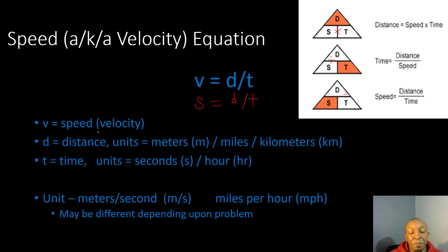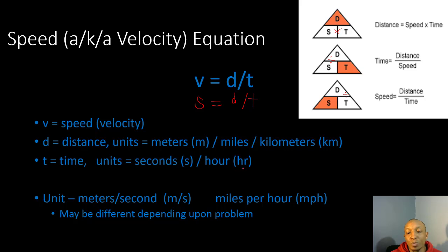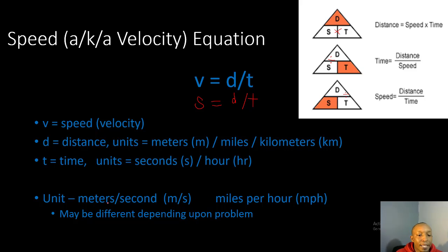v stands for speed or velocity. d stands for distance — units can be meters (m), miles, or kilometers (km). t stands for time — units can be seconds (s) or hours (hr). The unit for velocity or speed would be meters per second (m/s), miles per hour (mph), or kilometers per hour. Your units can change depending upon the problem, so make sure you look at your problems very carefully.